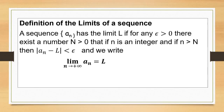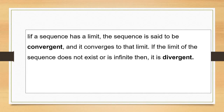If a sequence has a limit, the sequence is said to be convergent, and it converges to that limit. If the limit of the sequence does not exist or is infinite, then it is divergent.